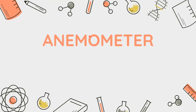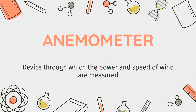Firstly, we will be discussing the instrument Anemometer. "Anemo" comes from the word meaning wind. So a device through which the power and speed of wind is measured is called an Anemometer — measuring wind speed and power.